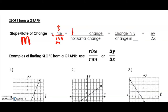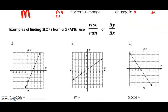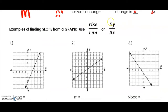The rise is your vertical change. Slope is the vertical change divided by the horizontal change, or the change in y divided by the change in x. We use the delta symbol (triangle) to represent change — so it's delta y divided by delta x. These are some examples of finding the slope from a graph using rise over run, or change in y divided by change in x.